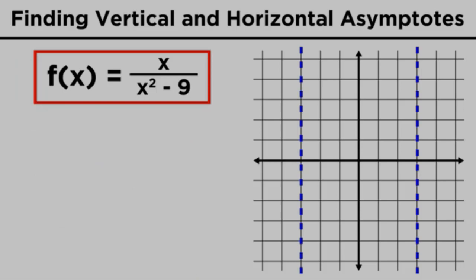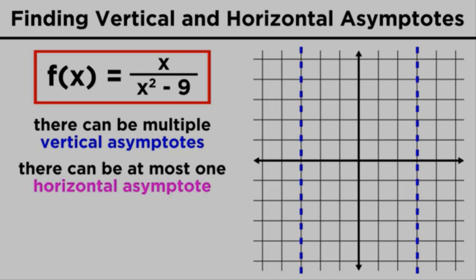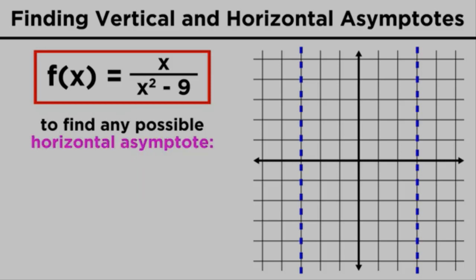We can also find out if there is a horizontal asymptote. We should note that while there can be multiple vertical asymptotes, there can only be one horizontal asymptote at most, so it's either one or none. To find out which, we list the numerator and denominator of the function as polynomials in standard form, not as products of factors. Then we look at the leading terms.